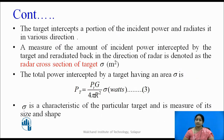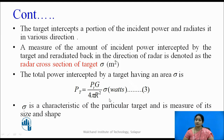The target intercepts a portion of the incident power and re-radiates it in various directions. The major amount of incident power is intercepted by the target and re-radiated back in the direction of the radar. This area is denoted by the radar cross section of the target, given by sigma (σ), measured in meter square. The power intercepted by the target having area sigma is given by Pt × G × σ divided by 4πr². Since it is multiplied by area, the meter square unit cancels.